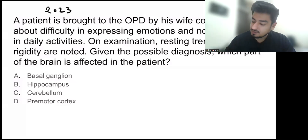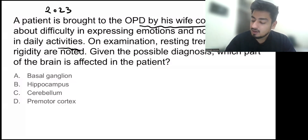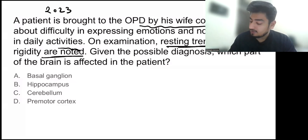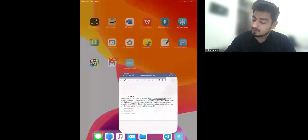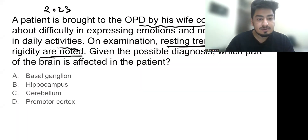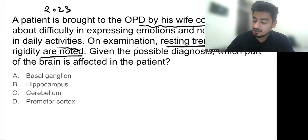The question reads: a patient is brought to the operative by his wife complaining about difficulty in expressing emotions and not taking part in daily activities. On examination, resting tremors and rigidity are noted. Given the possible diagnosis, which part of the brain is affected? The options are basal ganglia, hippocampus, cerebellum, and premotor cortex.